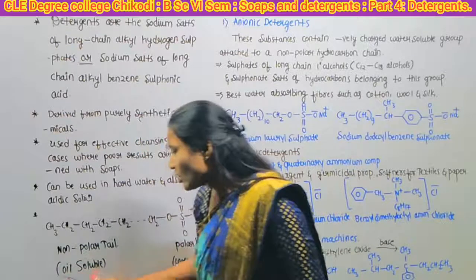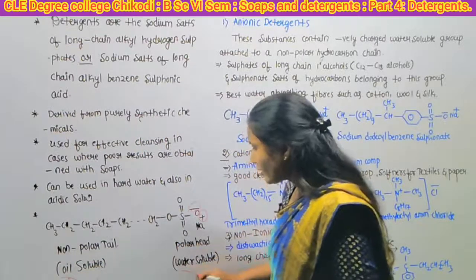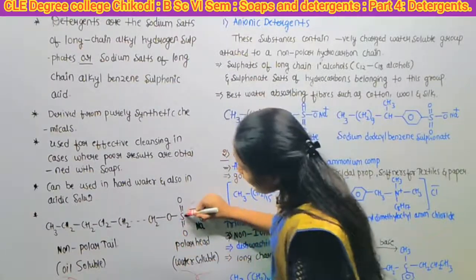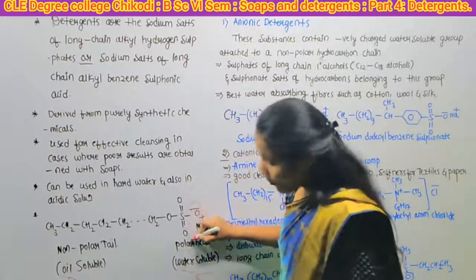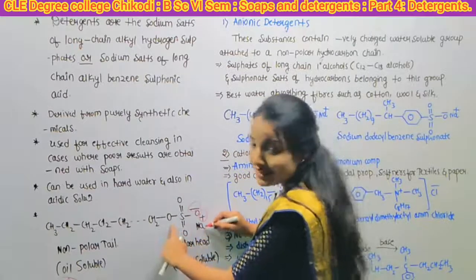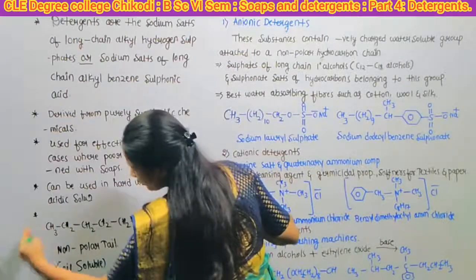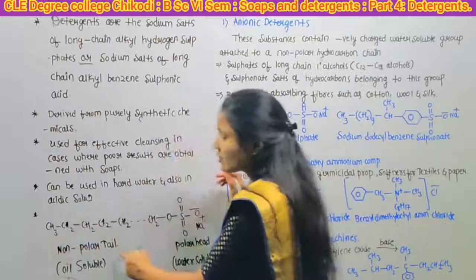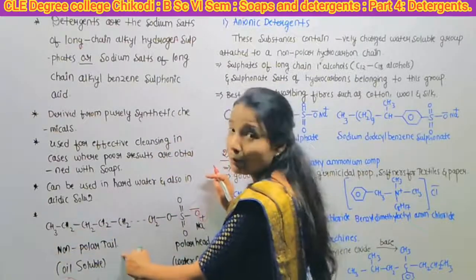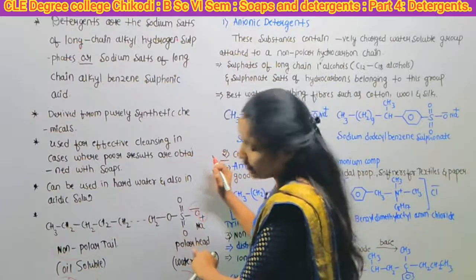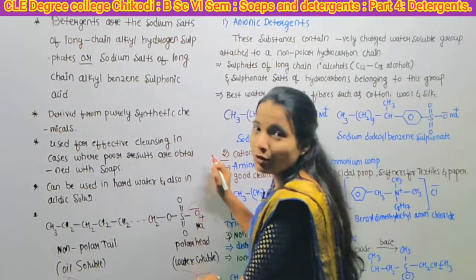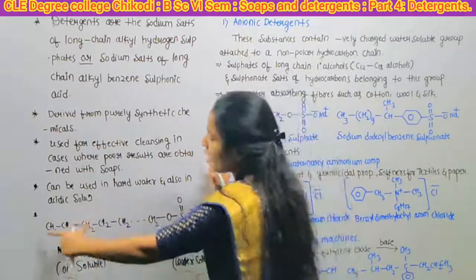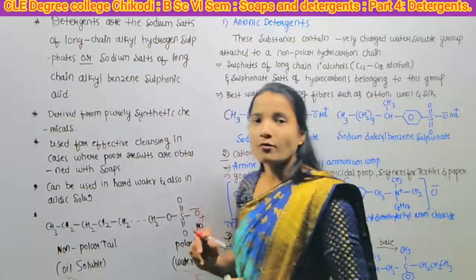This is the oil soluble part and this one is the water soluble part. The structure has a double bond O, double bond O, O minus Na plus, with the remaining hydrocarbon part. We call this the non-polar tail and this one is the polar head. The polar head is easily soluble in water; the non-polar tail is oil soluble. This is the structural representation of a detergent.